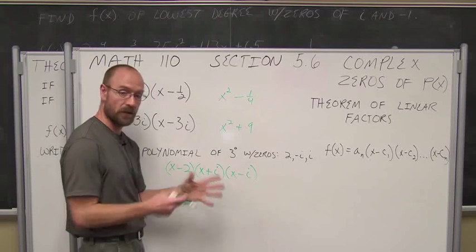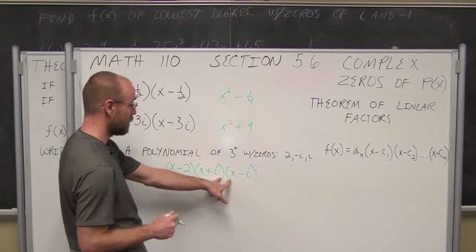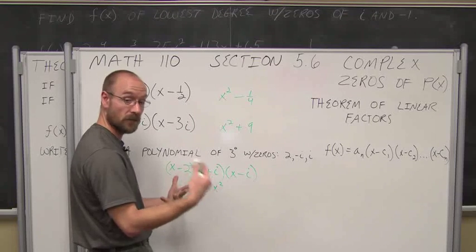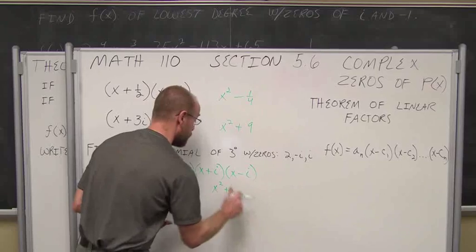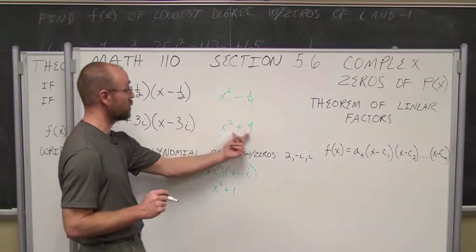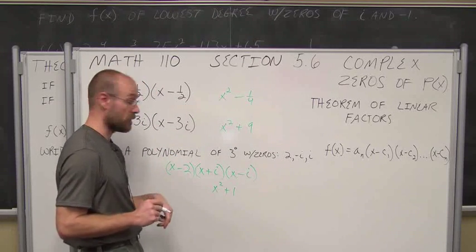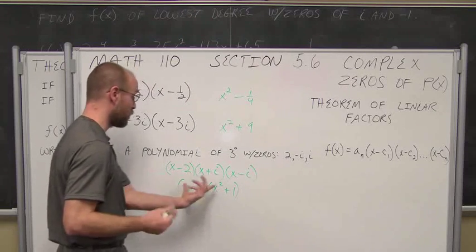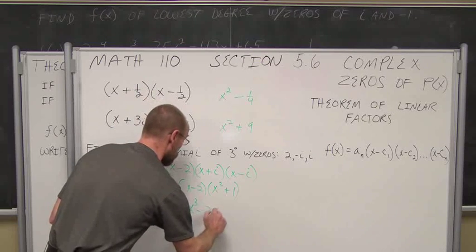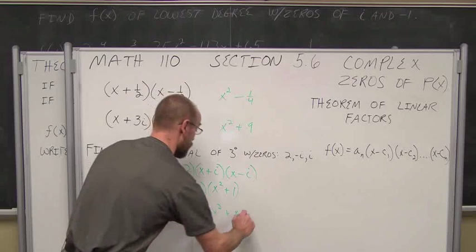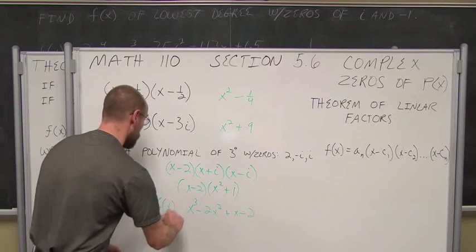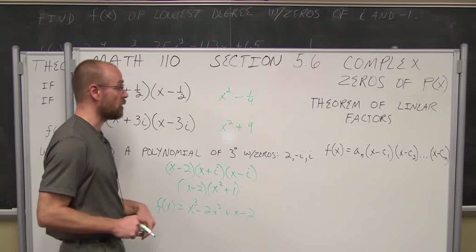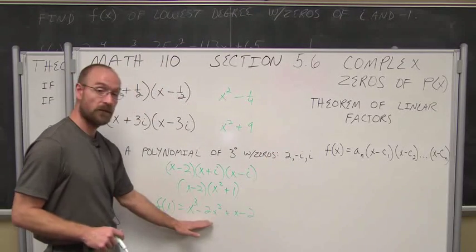I'm going to multiply the conjugate pair together first, because those middle terms will cancel — I'll have positive ix and negative ix. So that gives me x squared. i times negative i is negative i squared; i squared is negative 1, so it becomes x squared plus 1. Now I multiply by x minus 2 using FOIL, and I get x cubed minus 2x squared plus x minus 2. This is my polynomial function of third degree, with exactly those zeros. We went from linear factors to the polynomial.